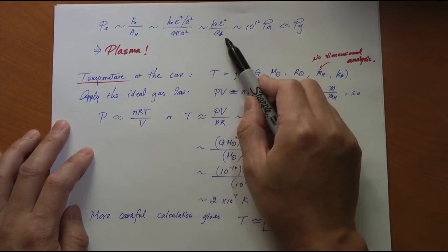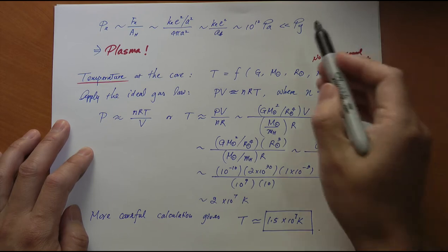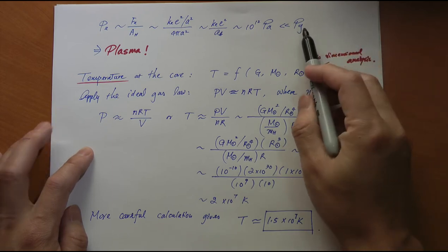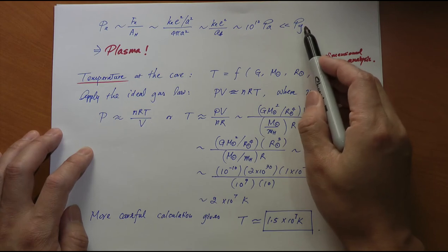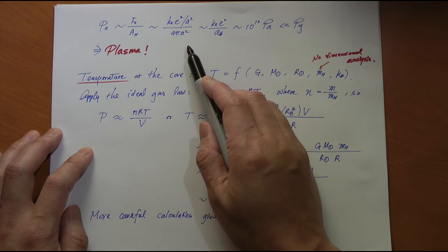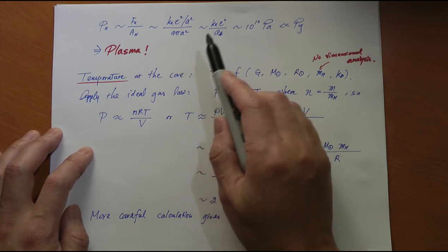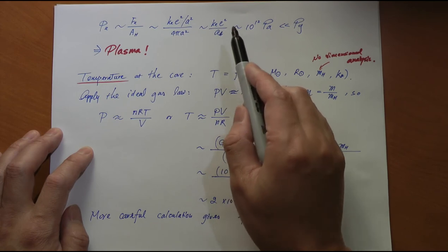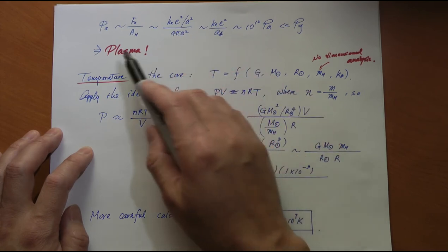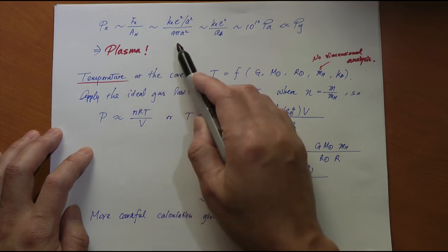This number turns out to be also very large, 10^12 pascal, but it's still a lot less than the gravitational pressure, which is 10^16 pascal. So the gravitational pressure will crush this alliance between the electron and proton in the charged-neutral hydrogen.